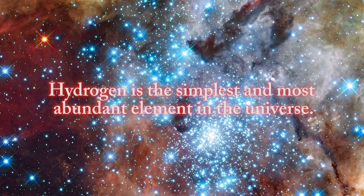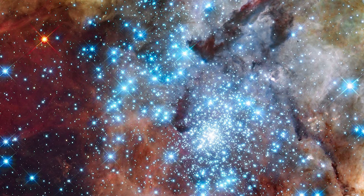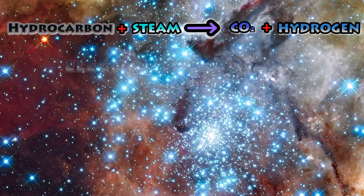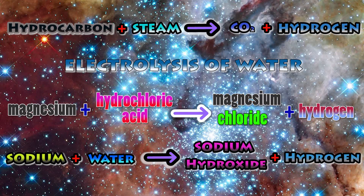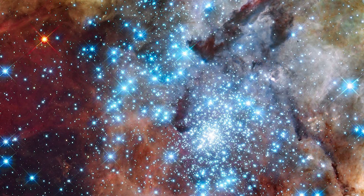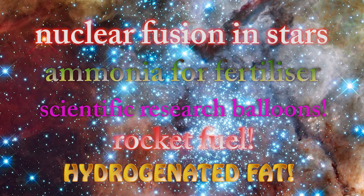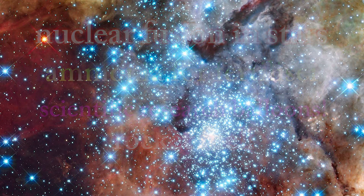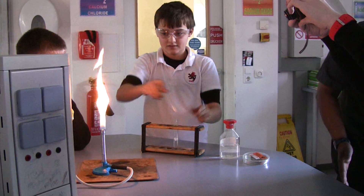Hydrogen is the simplest and most abundant element in the universe. It's made of one proton and one electron. Hydrogen can be produced in a variety of ways and also has many, many uses. But don't forget, it can be very dangerous and needs to be handled with care. And don't forget the squeaky pop test.